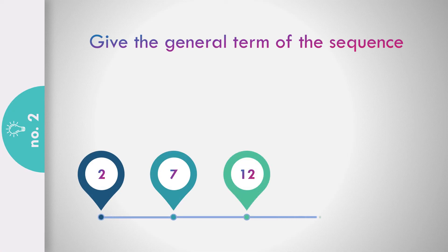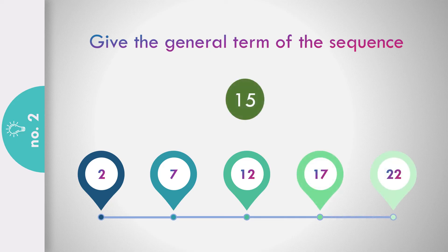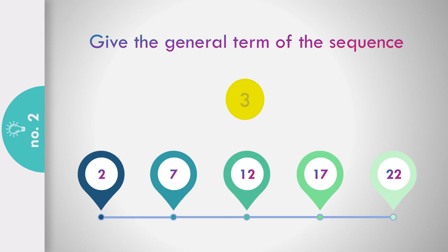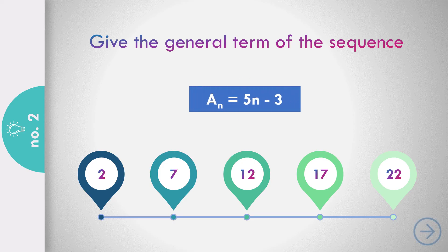Exercise number 2: In the sequence 2, 7, 12, 17, and 22 — are you ready to get the general term? The answer is a sub n equals 5n minus 3.